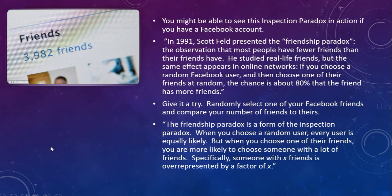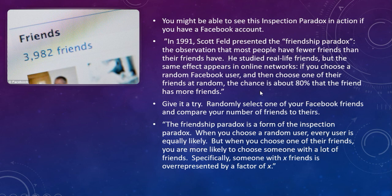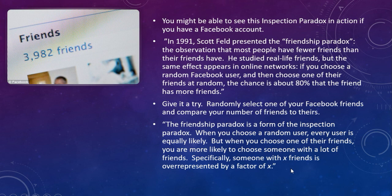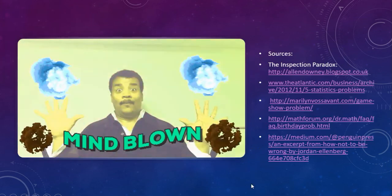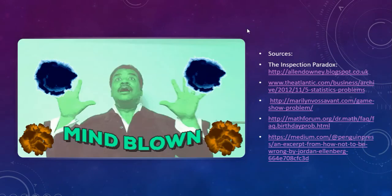You can also see the inspection paradox in action with Facebook. In 1991, Scott Feld presented an observation called the friendship paradox — that most people have fewer friends than their friends have. He studied real-life friends, but the same effect works for online networks. If you choose a random Facebook user and then choose one of their friends at random, there's about an 80% chance that friend has more friends. When you choose a random user, every user is equally likely. But when you choose one of their friends, you're more likely to choose someone with a lot of friends — someone with X friends is overrepresented by a factor of X. Have a fantastic day, and we'll see you next time.